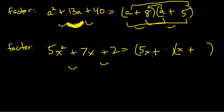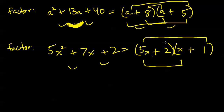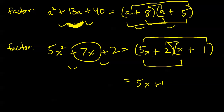It's a trial and error process. I'll put a 2 here and a 1 here, and we can check this: 5x squared plus 5x plus 2x is indeed 7x, plus 2 for the last product. So my final answer here is 5x plus 2 times x plus 1.